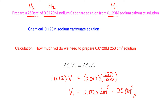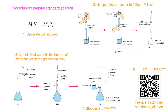So this is the very first step - we have to know how much stock solution is required to prepare the standard solution that we want. After we do the calculations, we know the volume required. Then we'll use a pipette, which can transfer a specific volume accurately. We transfer 25 cm³ of the solution and put it directly into the volumetric flask.